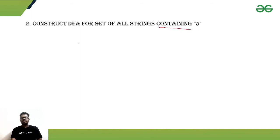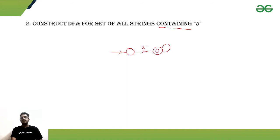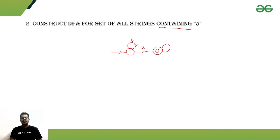There is another question: a string which will contain 'a'. From the initial state, if you are getting an 'a' at any point in the string, then our string will be accepted. In the initial state we can get multiple b's — that won't matter, because only b's cannot take us to the final state. We need at least one 'a'.